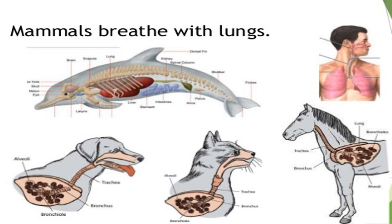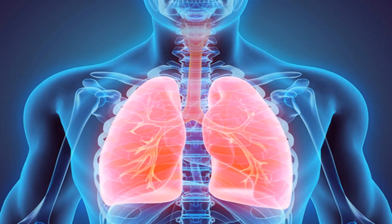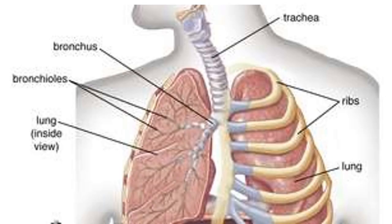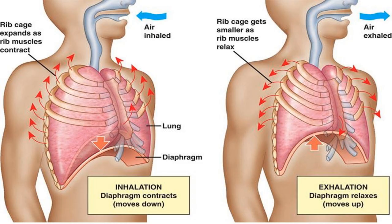The respiratory organs of mammals are lungs, and humans as mammals abide by this rule. The lungs allow the animal to take in oxygen from the surrounding atmosphere. A respiratory cycle consists of an inhalation followed by an exhalation, followed by inhalation again. This is a continuous process.